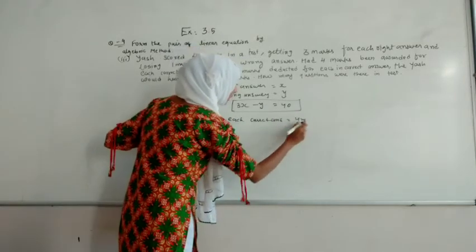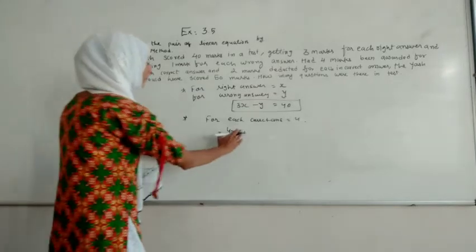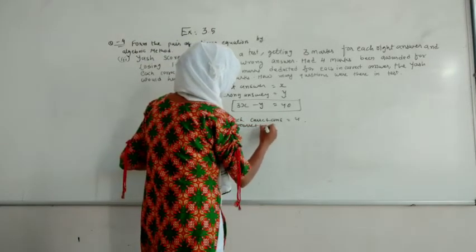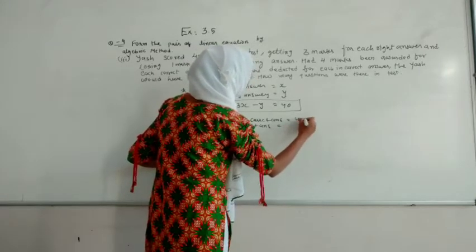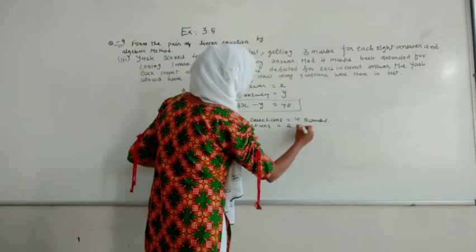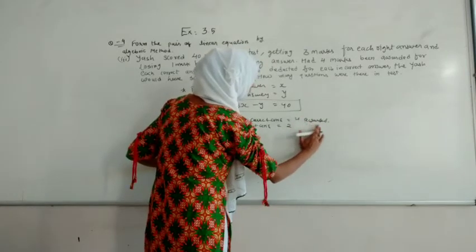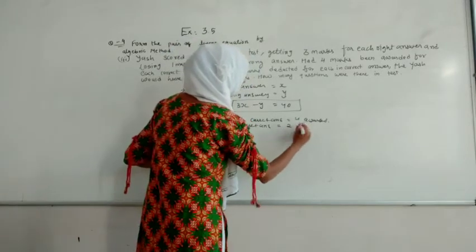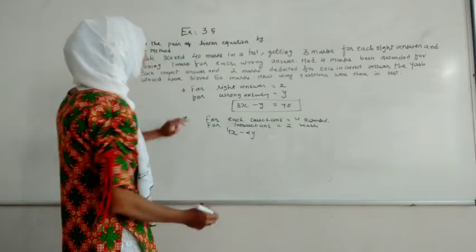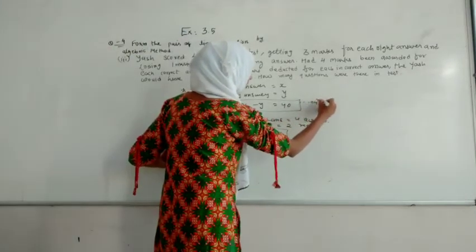For the second condition, he gets 4 marks for each correct answer, so he earns 4X, and loses 2 marks for each incorrect answer, giving minus 2Y. In total he gets 50 marks. So equation 2 is 4X minus 2Y equals 50. We will solve this using the elimination method.